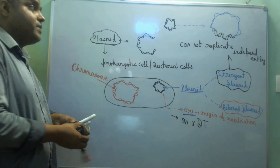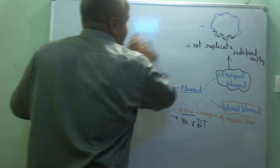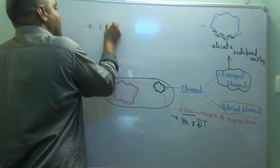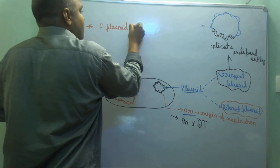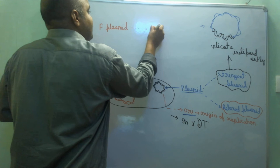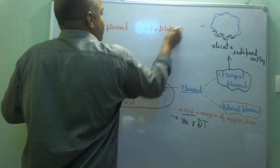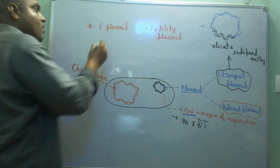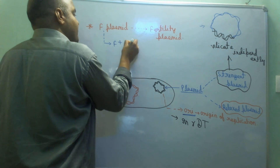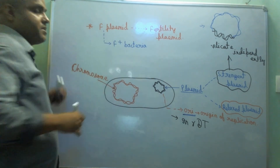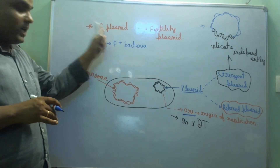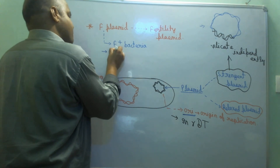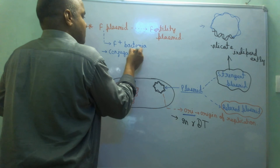This plasmid shows some extra features. For example, you may have heard of a plasmid called F-plasmid, also called fertility plasmid — it is the same thing. The bacteria which have this fertility plasmid are called F-plus bacteria. This F-plasmid actually participates in the conjugation of two bacteria.